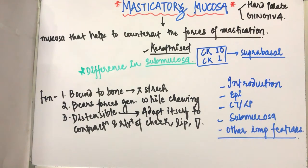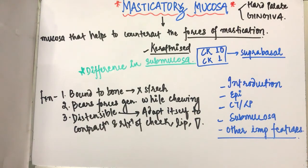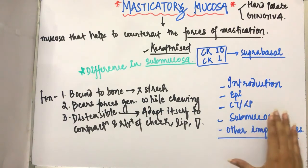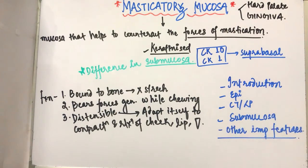To summarize: masticatory mucosa bears the forces of mastication, is made up of hard palate and gingiva, and is keratinized. The difference among masticatory mucosae lies in the submucosa. It has the same thickness, keratinization, density, and firmness of the lamina propria. In the supra basal layer, it contains CK1 and CK10 proteins. Its functions are: bound to bone without stretching, bears chewing forces, and is distensible to adapt to muscle movements. In the next video, I'll discuss the hard palate — stay tuned, thank you.